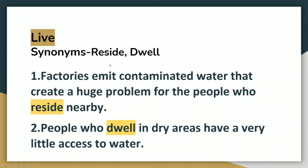Here is the next word for you: LIVE. The synonyms that you can use are reside and dwell. Factories emit contaminated water that creates a huge problem for the people who reside nearby. People who dwell in dry areas have very little access to water. Nice words, right?